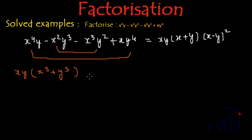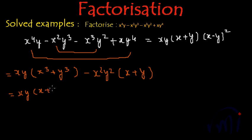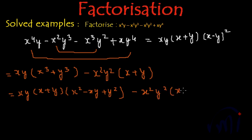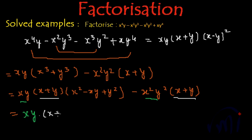And from the next two terms, if I take minus x squared y squared common, we will have x plus y inside the bracket. Now writing this out: xy as it is, and x cubed plus y cubed becomes x plus y multiplied by x squared minus xy plus y squared, and this minus x squared y squared multiplied by x plus y stays as is. Here xy and x squared y squared share xy as a common factor, and both terms have x plus y, so we can take xy and x plus y as common factors.